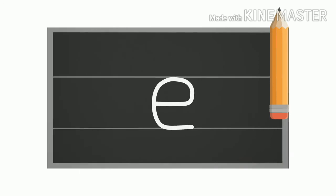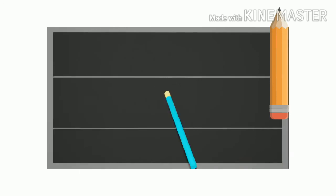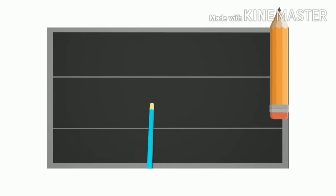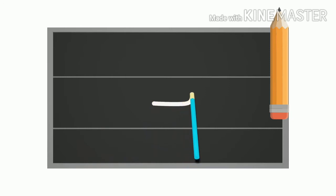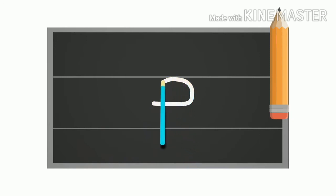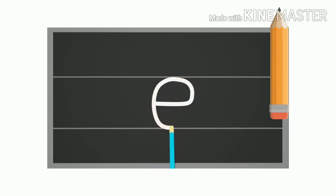Small e: start below the middle, making a loop, and continue to draw a curl reaching the bottom. This is your small e.